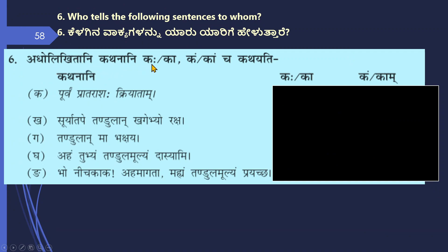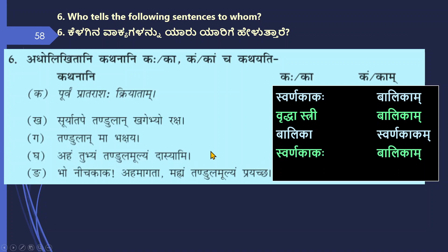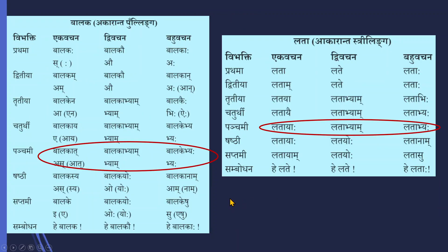Adholikhitani kathanani kaha kam cha kathayeti — who tells the following sentences to whom? Poorvam pratarasha kriyatam — 'first have breakfast' — Swarna Kakah balikam kathayeti, the golden crow tells the girl. Suryatape tandulaan khhagabhyo raksha — 'in the sunlight protect the rice grains' — Vriddha stri balikam prati kathayeti, the old woman tells the girl. Tandulaan ma bhakshaya — 'don't eat the rice grains' — also said to the girl. Ahm agata, mahiyam tandulam mulam prayaccha — 'I have come, give me the price of the rice grains' — Lubdha balika Swarna kakam vadati, the greedy girl tells the golden crow.